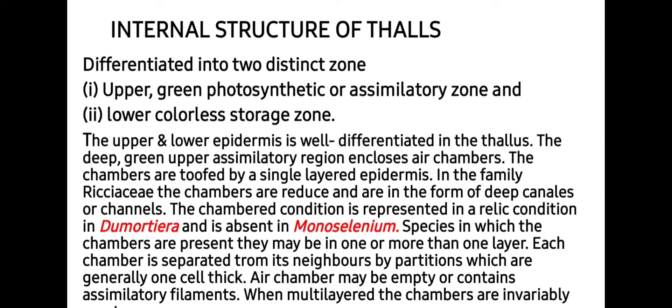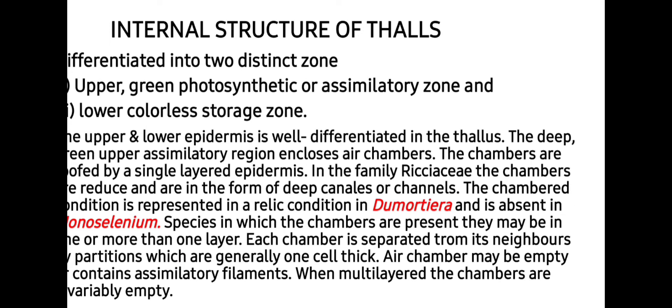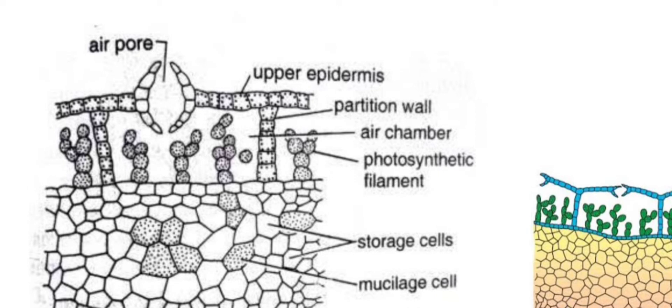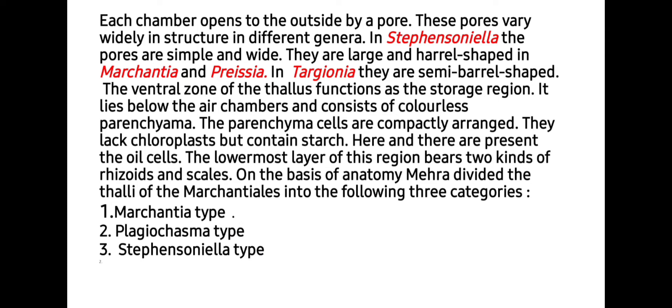Species in which chambers are present may have one or more than one layer. Each chamber is separated from its neighbors by partitions which are generally one cell thick. Chambers may be empty or contain assimilatory filaments; when multi-layered, the chambers are invariably empty. Each air chamber is separated from others by a partition and encloses air pores at the upper surface. These pores vary widely in structure: in Stephanosomella the pores are simple and wide; they are large and barrel-shaped in Marchantia and Preissia; in Targionia they are semi-barrel-shaped.